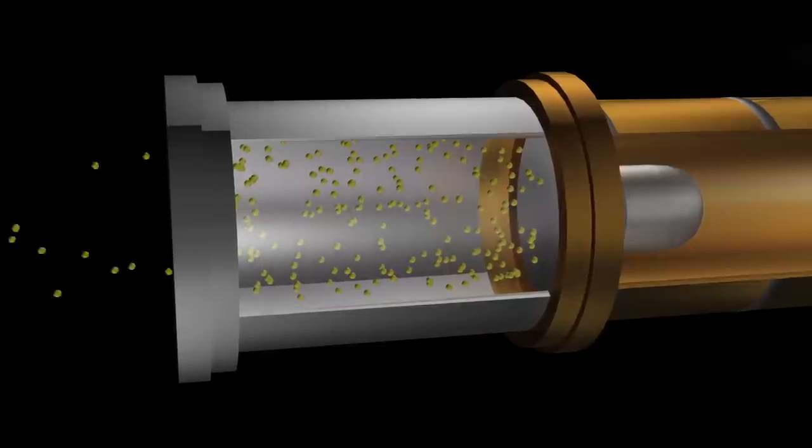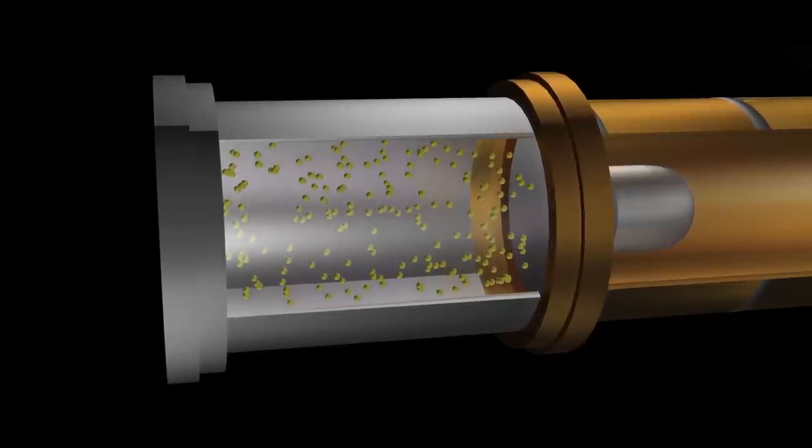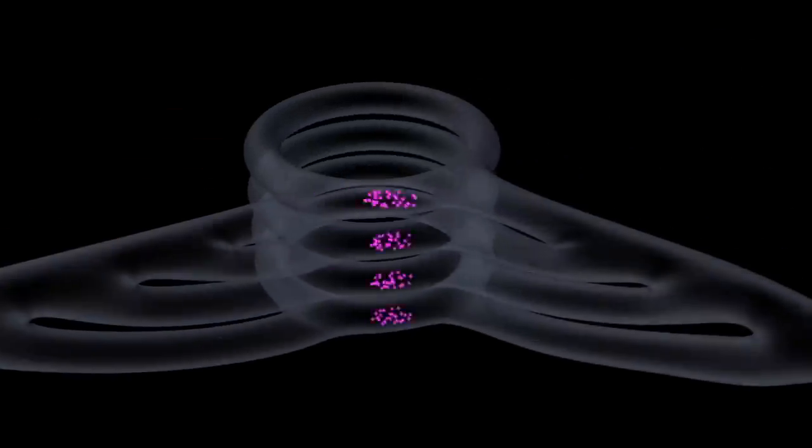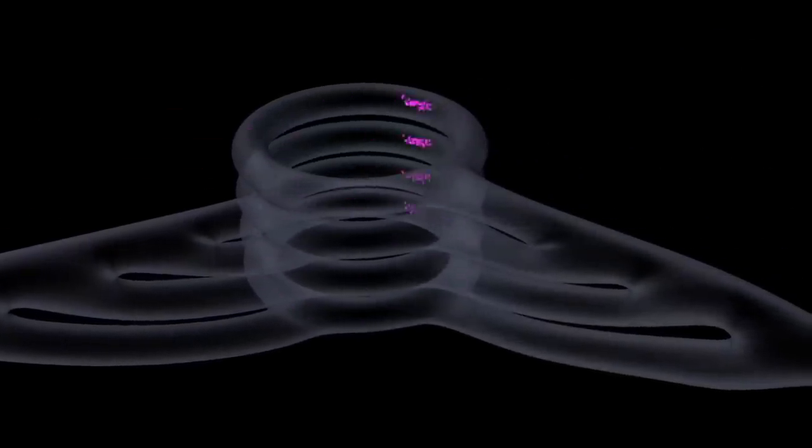Protons are created by stripping hydrogen atoms of their electrons. Before protons enter the Large Hadron Collider, they are fed through a series of boosters, which accelerate them to increasingly higher energies.